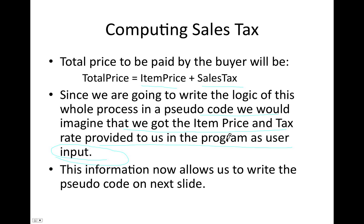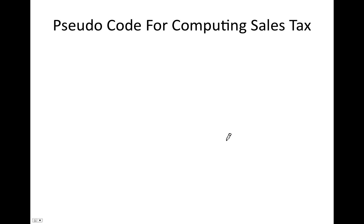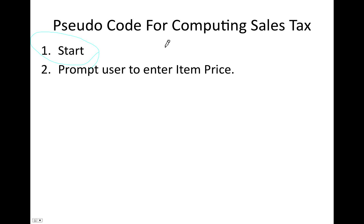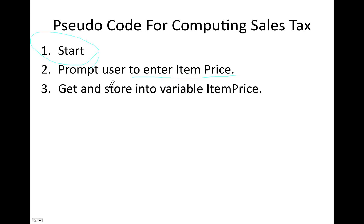I think we have enough information now to start writing the pseudocode. In pseudocode, the first step is always 'Start' — that's a formality. When you actually write source code, you don't have to code this step; it's automatically handled by the programming language. We include it in pseudocode just to mark when we started and when we ended. Next, we prompt the user to enter the item price, get that value, and store it into a variable named 'itemPrice'.